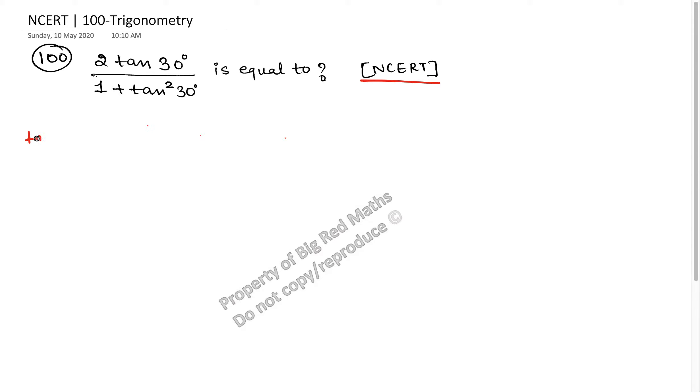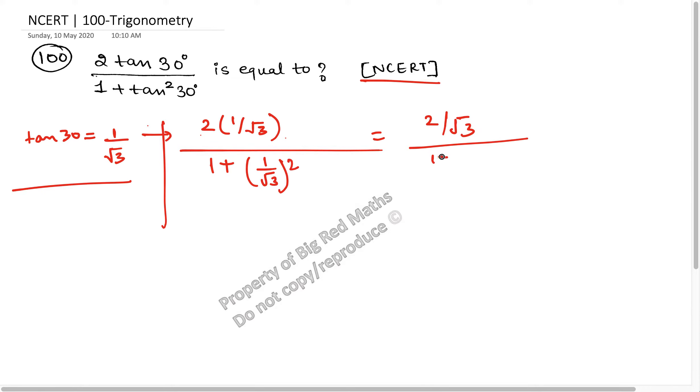Why? Because tan 30 is 1 upon root 3. This one is 1 upon root 3, this one is 1 upon root 3. The whole thing divided by 1 plus tan square 30, this one is 1 upon root 3 whole square. So this one is 2 upon root 3 divided by 1 plus 1 upon 3. Are you out there?